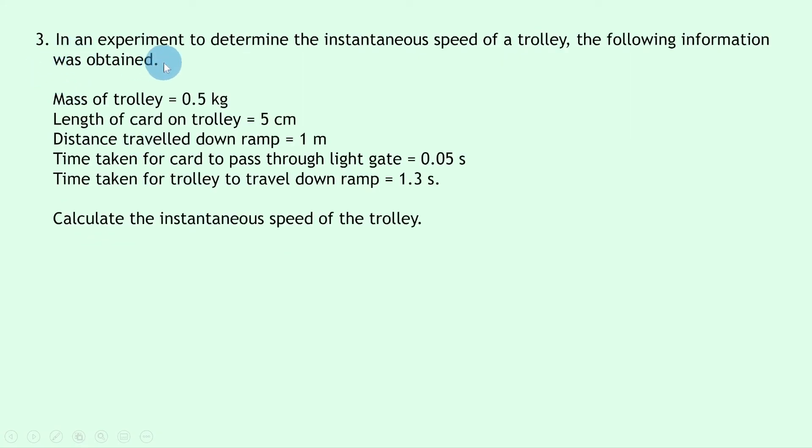Lastly, question 3 says in an experiment to determine the instantaneous speed of a trolley, the following information was obtained. The mass of the trolley is equal to 0.5kg, the length of the card on the trolley 5cm, distance travelled down the ramp is 1m, time taken for the card to pass through the light gate is equal to 0.05 seconds, and the time taken for the trolley to travel down the ramp is 1.3 seconds.